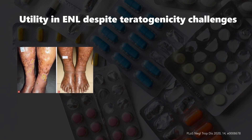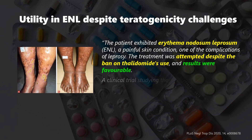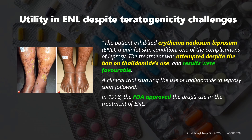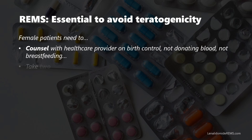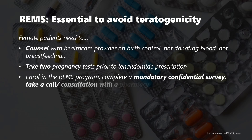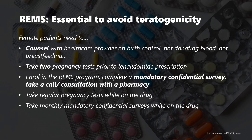Thalidomide's risks but also benefits didn't go away. Shortly after its initial withdrawal, it proved efficacious in erythema nodosum leprosum (ENL), a leprosy complication. To avoid teratogenicity, access to the drug is restricted through risk evaluation and mitigation strategies, short REMS. Female patients must avoid pregnancy through regular testing and use of two or more forms of reliable contraception. Thalidomide was approved for leprosy in the US in 1998. However, use in countries like Brazil with subpar REMS has still led to some cases of embryopathies.